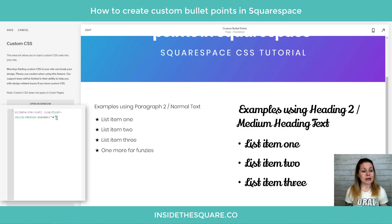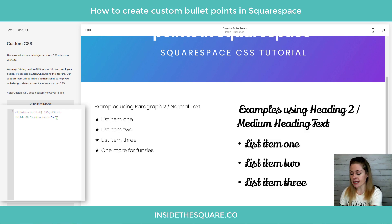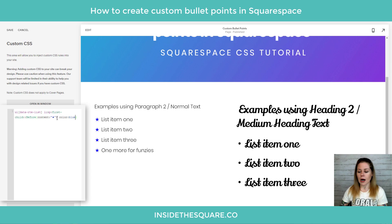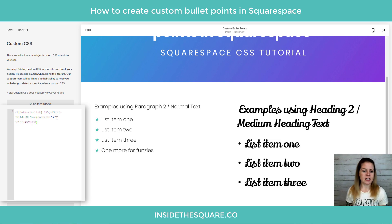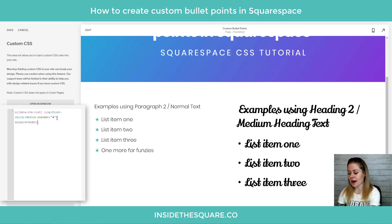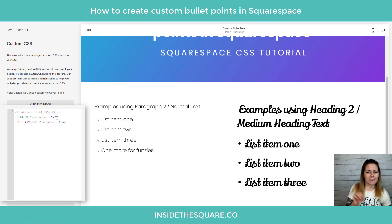A cool thing you can do is also change the color and size of those bullet points individually without affecting the rest of your list. So if I want those stars to be blue, I can add a semicolon and say color: blue — or I can change it to that shade of teal I love, #50bdb8, and now they'll be that bright shade of teal. I can also reduce the size by adding a semicolon and saying font-size: 0.8rem, which will shrink them down a little bit. So you have a lot of different options that will only apply to that bullet point.